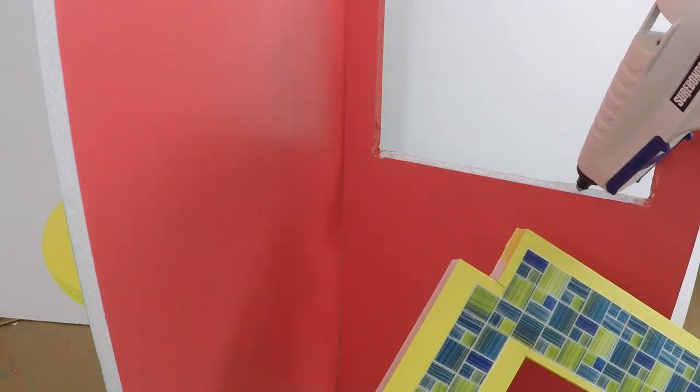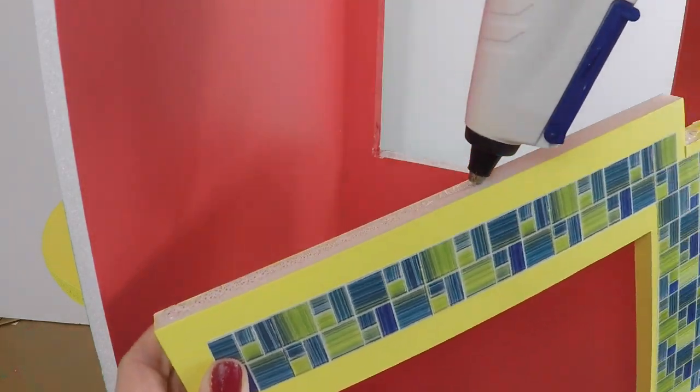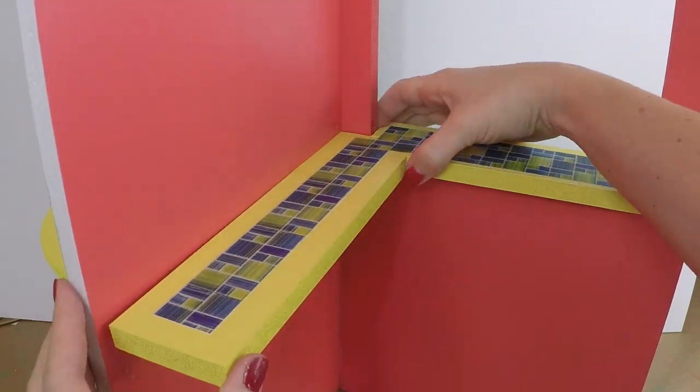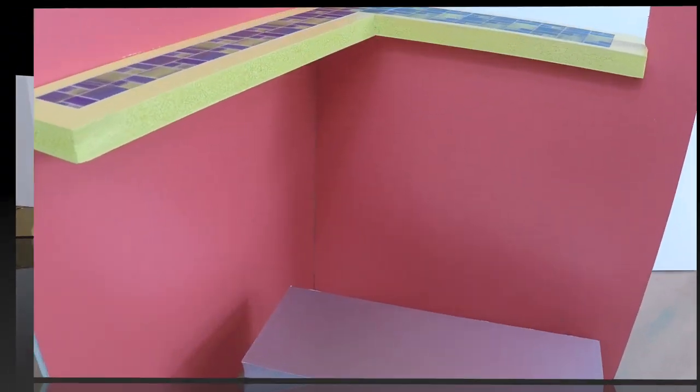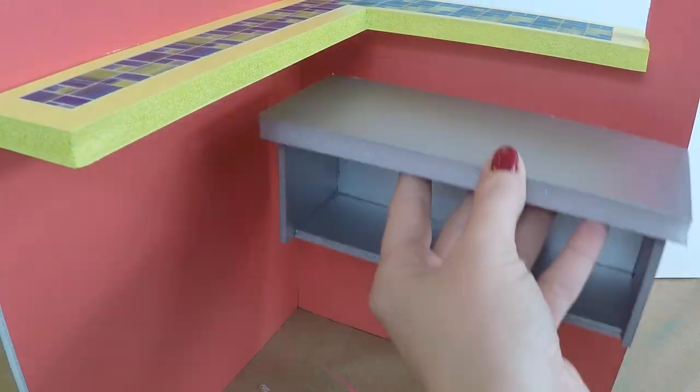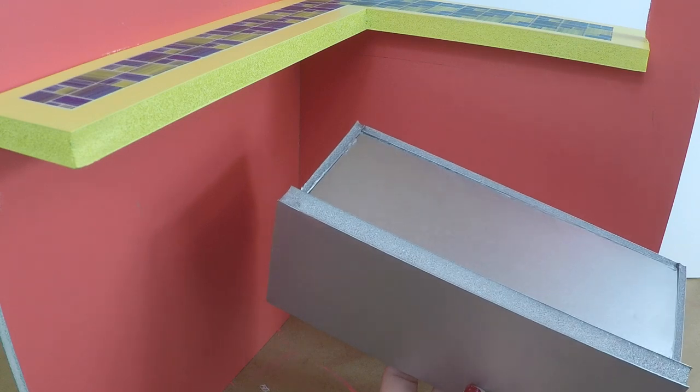Now that the fruit stand is put together, you can add the countertop on the inside. Make sure it fits snug. Now you can take the lower shelf and hot glue it into place. You might want to mark where it goes before you add it to the wall.